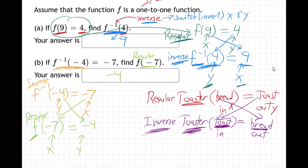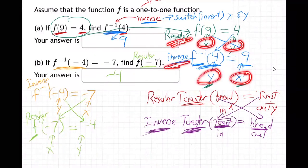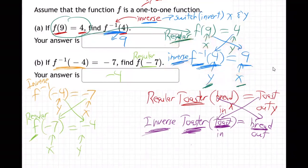So the moral of the story, a regular function, you put in x, get out y. An inverse function, you put in y, get out x. It just swaps them. That's the point of this example. So up here, regular function, put in nine, get out four. Inverse, put in four, get back out nine. Same thing here. Inverse function, put in negative four, get out negative seven. And then regular function, negative seven goes back to negative four. There we go.